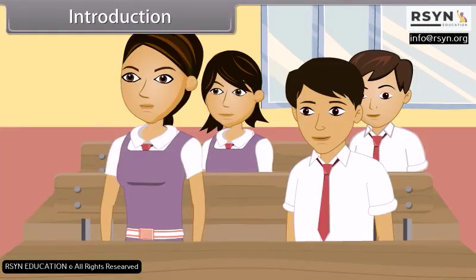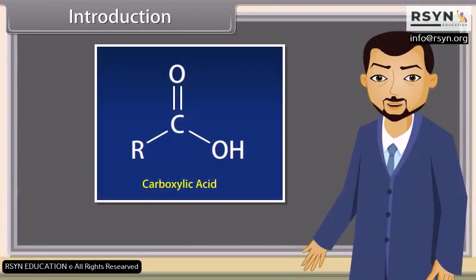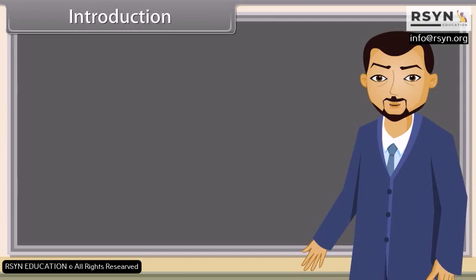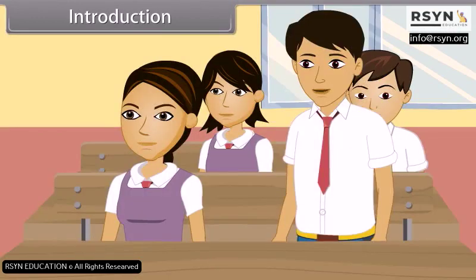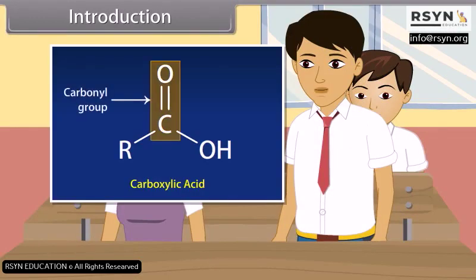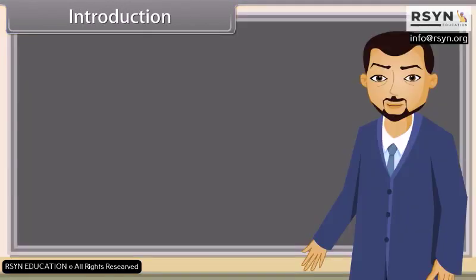Teacher, what are carboxylic acids? Carboxylic acids are the organic compounds which contain carboxyl group. Now, who will tell me what is carboxyl group? Carboxyl group consists of carbonyl group and hydroxyl group. Very good, Ramesh. In this lesson, we will learn more about carboxylic acids.